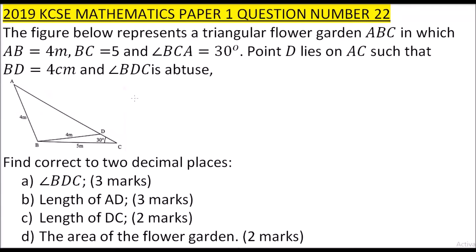This is 2019, question number 22. In the figure below, the figure represents a triangular flower garden ABC in which AB is equal to 4 meters, BC is equal to 5 meters, and angle BAC is 30 degrees. Point D lies on AC such that BD is 4 centimeters and angle BDC is obtuse. The question is, find correct to two decimal places: